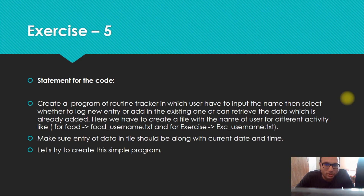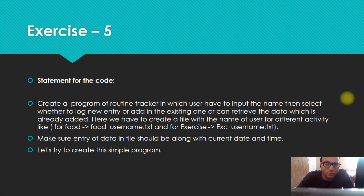I'll explain once more what we're achieving. When we run the code, the user inputs a username, then there's an option to log or to retrieve. There are three scenarios: one — the user is using this code for the first time, so they input a username and then select log or retrieve. The user selects option one to log, then goes to the section where they select an activity. It's a routine tracker, so activities include food entry or exercise — like eating pizza or doing exercise.